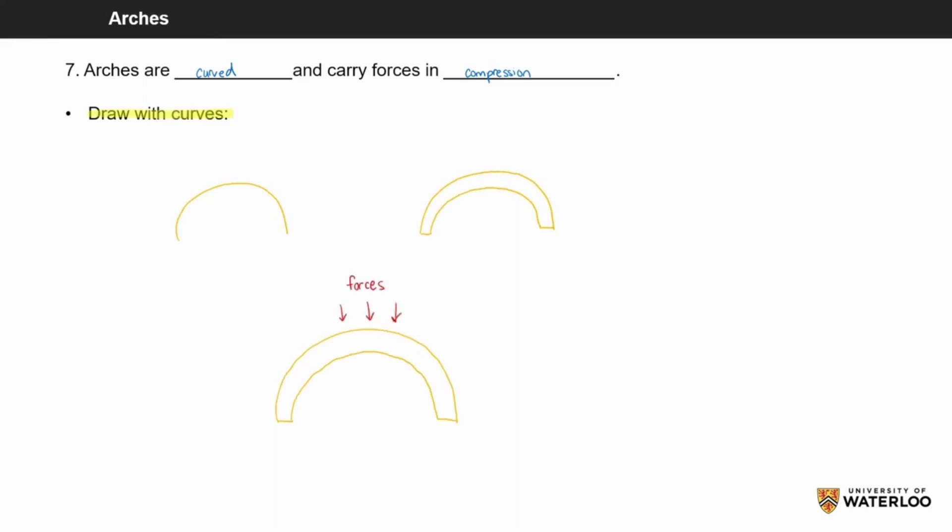When there are forces acting vertically from the top of the structure, we can show the forces being distributed towards the sides and downwards into the ground. I have shown the load path with green arrows.